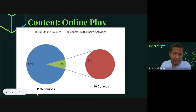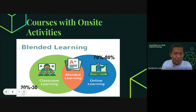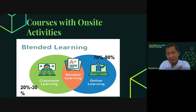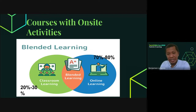That's around 92 percent of courses this semester delivered fully online, and 8 percent will have on-site activities. There are two senses when we use the term online class: our primary mode of instruction will still be online, and there will be courses that will have on-site activities. But 70 to 80 percent of activities will be delivered online, while the remaining 20 to 30 percent shall be delivered on-site.